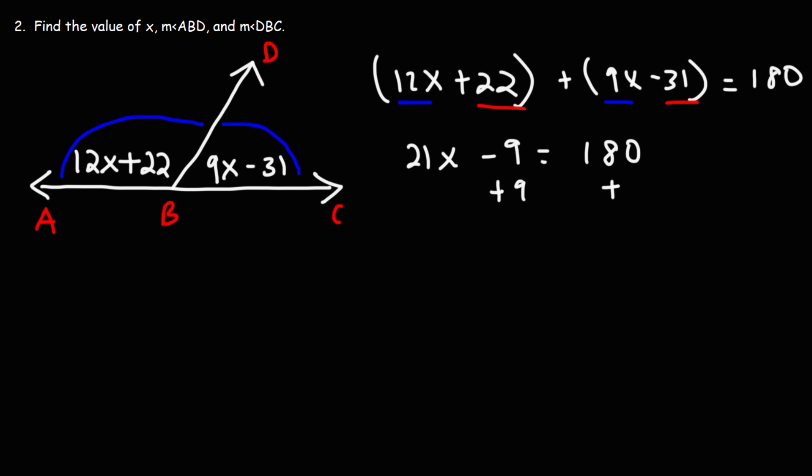And then if we add 9 to both sides, we're going to have 21X is equal to 189. Next, we can divide both sides by 21. So 189 divided by 21 is going to give us 9. So that's the value of X. X is equal to 9.